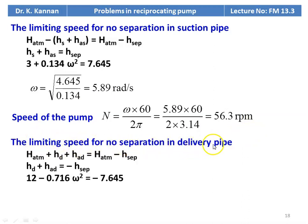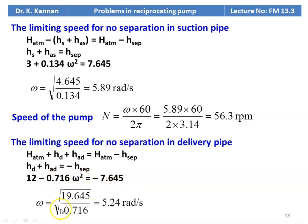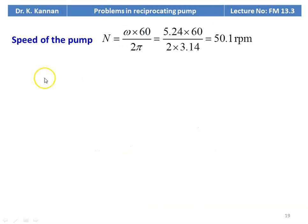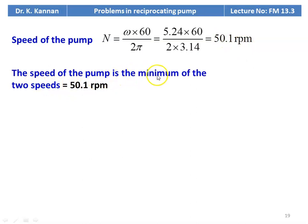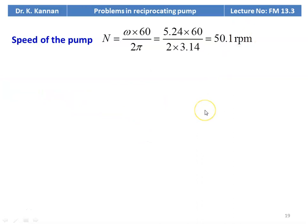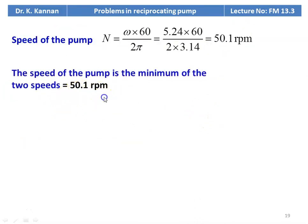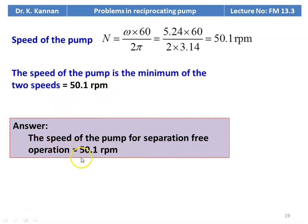Limiting speed for no separation in the delivery pipe: HD + H_CAD = −H_separation, so 12 − 0.716ω² = −7.645. Thus ω = √(19.645/0.716) = 5.24 rad/s. Speed N = 5.24 × 60/(2×3.14) = 50.1 RPM. The speed of the pump is the minimum of the two values: minimum of 56.3 and 50.1 is 50.1 RPM. The speed of the pump for separation-free operation is 50.1 RPM.